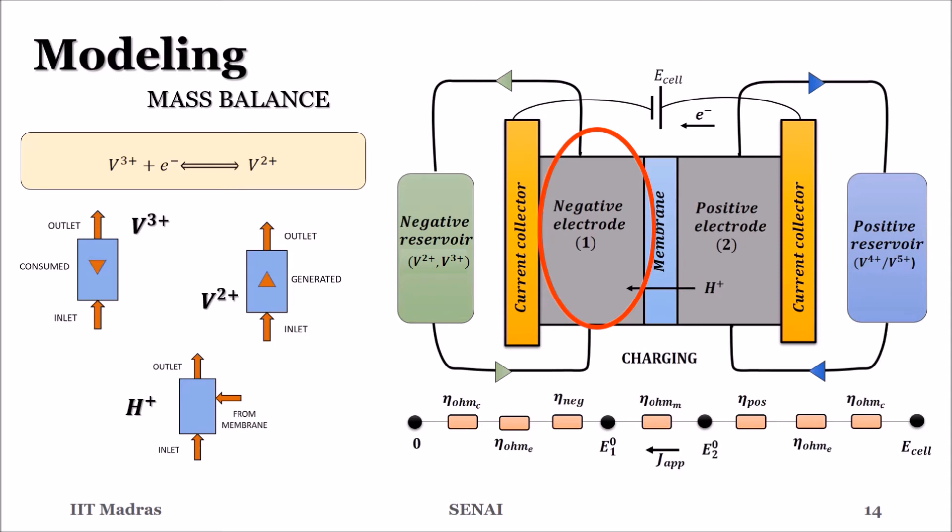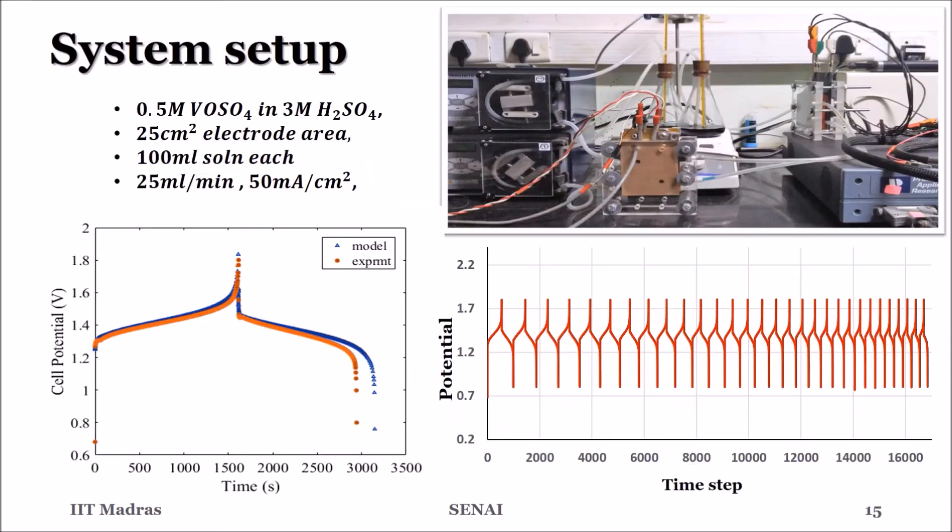Solving this system of differential equations, we can find the variation of potential with time during the operation. A unit cell VRFB of 25 cm2 electrode area was set up for the experimental investigation of theoretical results and model validation.